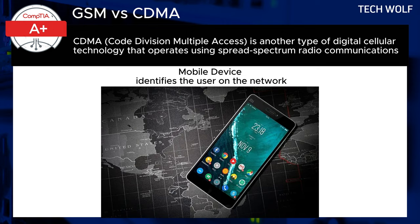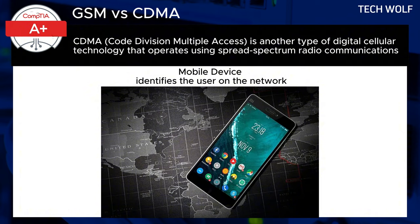With CDMA, your identity is tied to the phone itself, not a SIM card. This means that when you want to switch phones, your service provider has to update their system to recognize the new device. They keep a list of approved CDMA phones that can connect to their network.